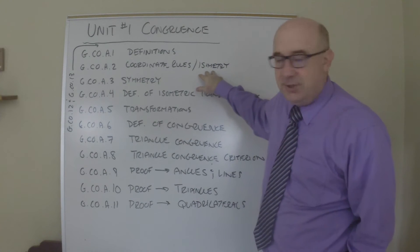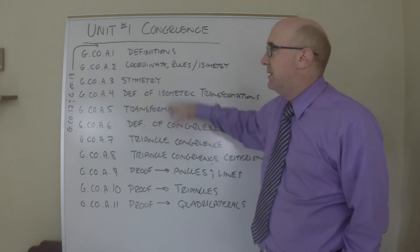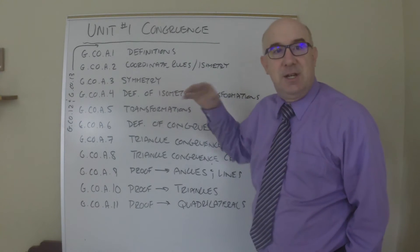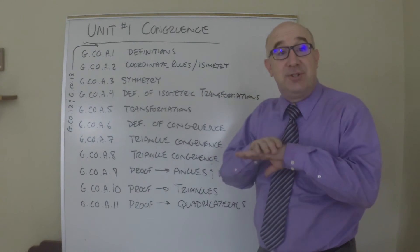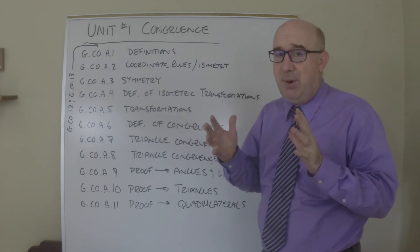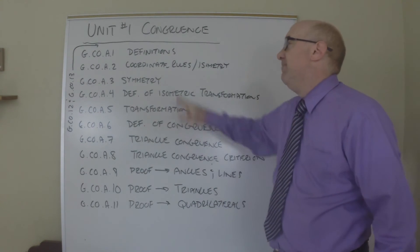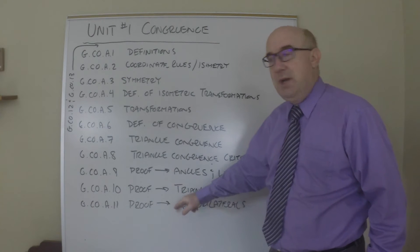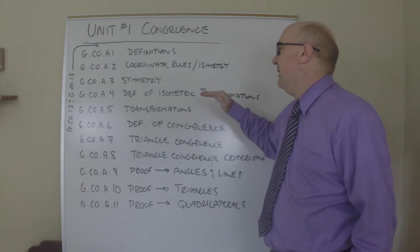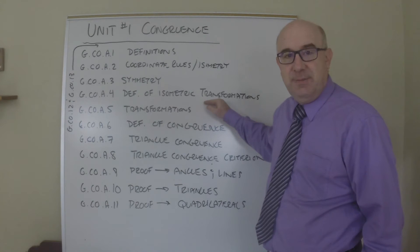What is an isometry? This leads us to congruence. Symmetry is also leading us to congruence. If you can map onto yourself, there are pieces and parts that are congruent there. The symmetry helps us later with quadrilaterals. Then we define the isometric transformations.